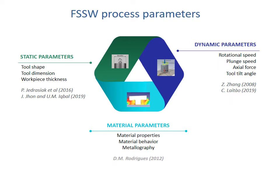However, despite the advantages of friction stir spot welding, weld joint quality may be affected by the process parameters. Therefore, industrials and researchers aim to investigate the effect of those parameters on the final properties of the weld. Three types of parameters are summarized: static parameters, which are the tool shape and dimensions; dynamic parameters, mainly the rotational speed and the plunge speed; and material parameters, which are the material properties and behavior.